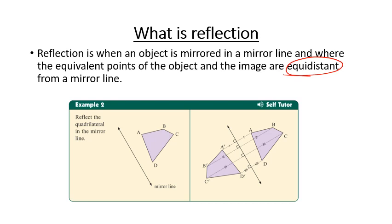Looking at our example, we can see the mirror line in green and a few points marked. The red dots are the same distance — equidistant — you can see that this distance here and that distance there are the same. The D dots are the same distance away, and the B and C dots are also the same distance away. Those lines meet perpendicular with the mirror line, so we can see right angles where those lines meet the mirror line.